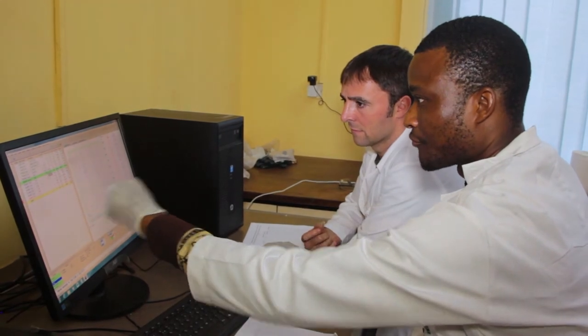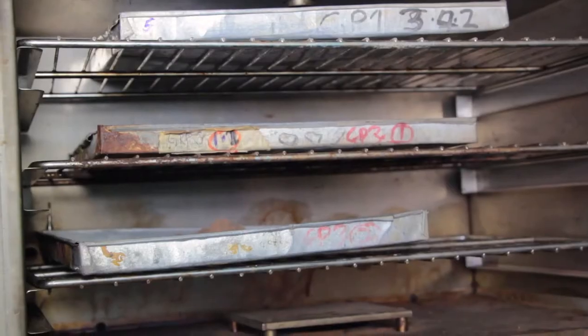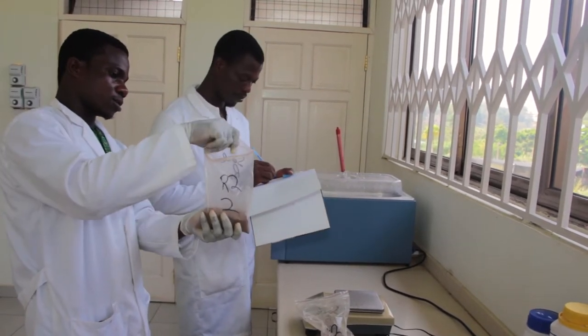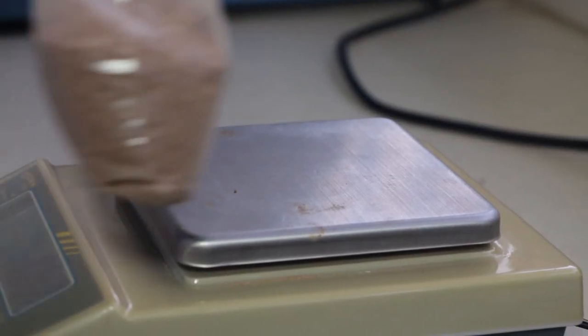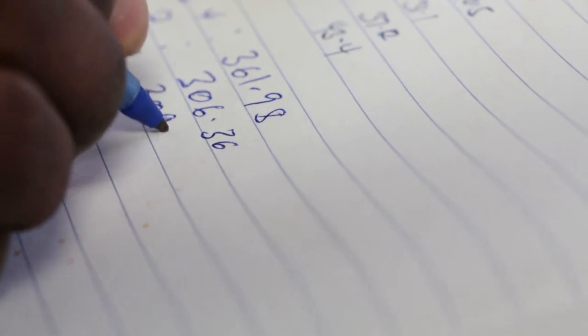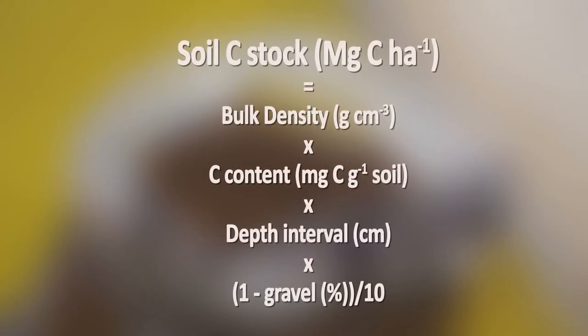To calculate the carbon stocks of each sampling location in the field, the measured carbon concentration must be multiplied by the soil bulk density. Bulk density is expressed in grams per cubic centimeter. Soil samples for bulk density are dried in an oven at 105 degrees Celsius and then weighed. Gravel and root content greater than two millimeters in diameter will be weighed separately. After carbon content and bulk density are recorded, soil carbon stock can be calculated using the following formula: soil carbon stock is calculated by multiplying soil bulk density by the concentration of organic carbon in the soil by the soil depth interval by the calculation of 1 minus the fractional gravel content, divided by 10.